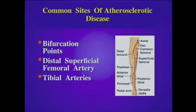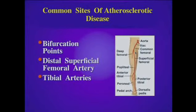It is important to recognize that we can identify atherosclerotic disease at the bifurcation points. We'll be able to see significant lesions at the aortic bifurcation, iliac bifurcation, femoral bifurcation, and the tibial trifurcation. Another important area is the superficial femoral artery at the level of the adductor canal, as this is an important site of disease in diabetic patients.